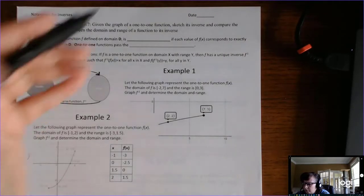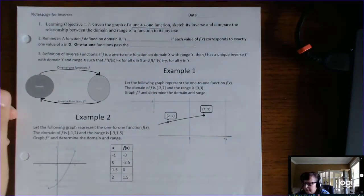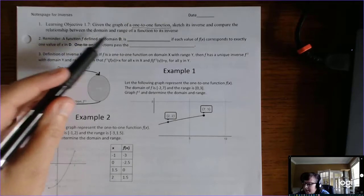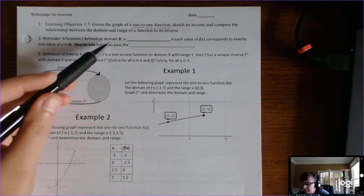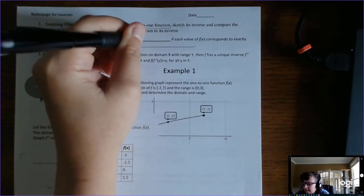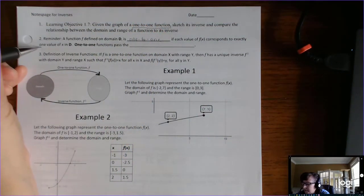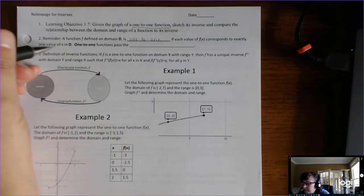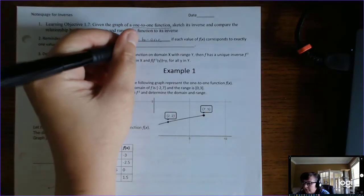Given the graph of a 1-to-1 function, we'll sketch its inverse and compare the relationship between the domain and range of a function to its inverse. A function f defined on domain d is 1-to-1 if each value of f of x corresponds to exactly one value of x in d. And so 1-to-1 functions pass the horizontal line test.